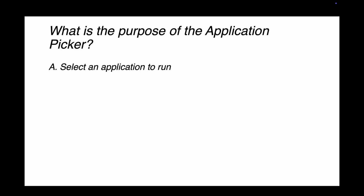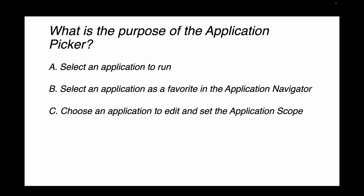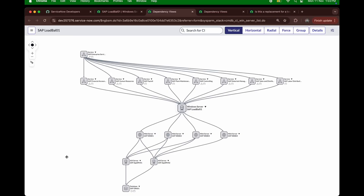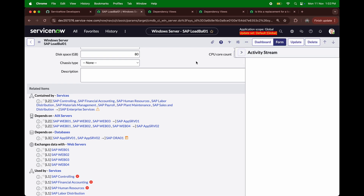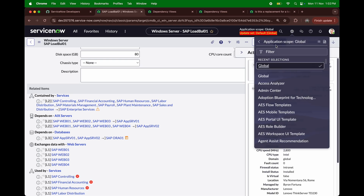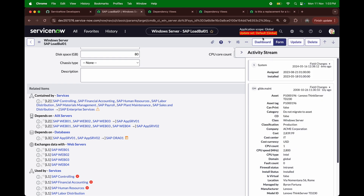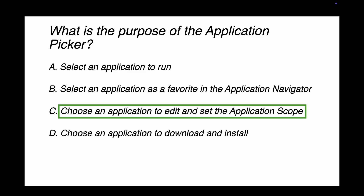Question number seven: what is the purpose of the application picker? Options are: select an application to run; select an application as a favorite in the navigator; choose an application to edit and set the application scope; or download and install an application. The application picker icon lets you choose different scopes and edit that particular application — all updates are stored in the update set. The right answer is: choose an application to edit and set the application scope.